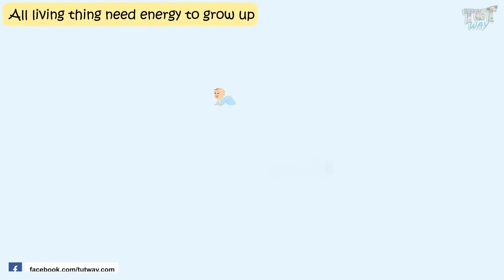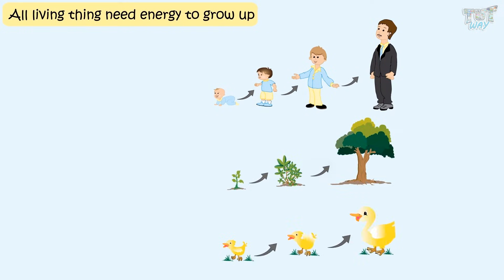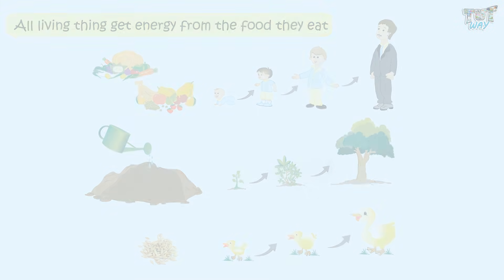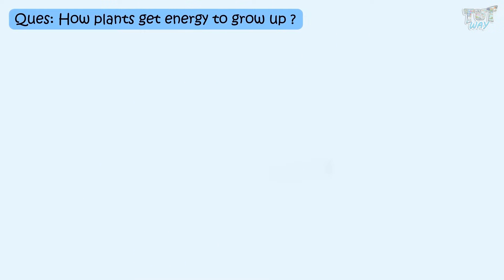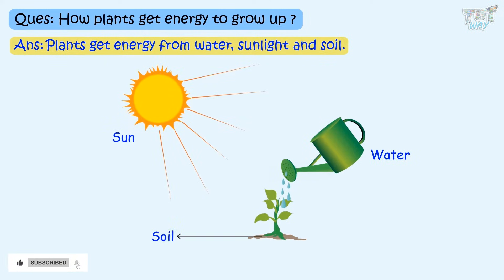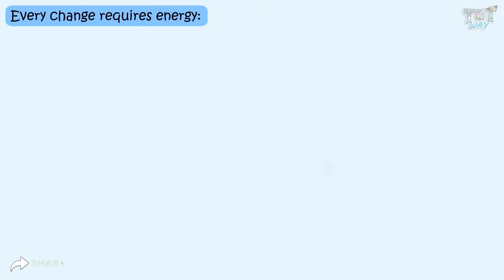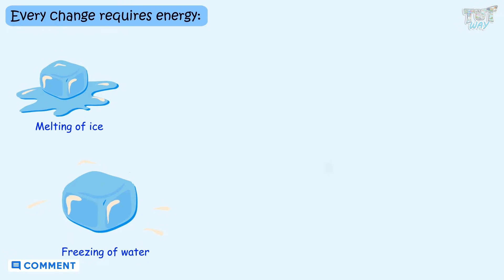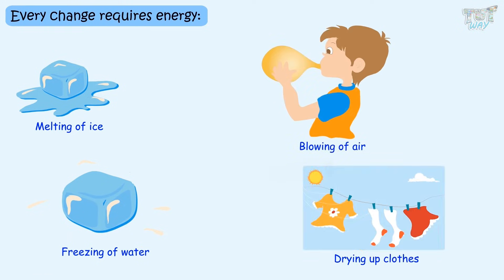All living things — plants and animals — need energy to grow up, and they get that energy from the food they eat. Do you know how plants get energy to grow up? Plants get energy from water, sunlight, and soil. Every change like melting of ice, freezing of water, blowing of air, or drying up clothes — every activity requires energy.